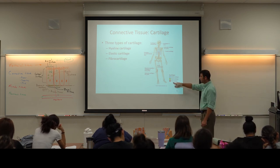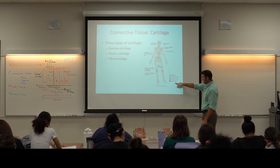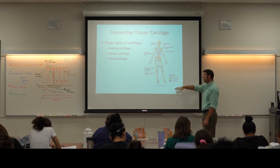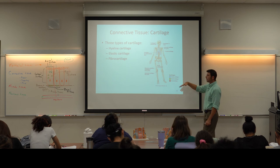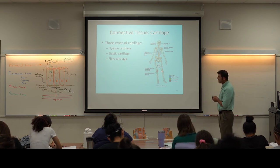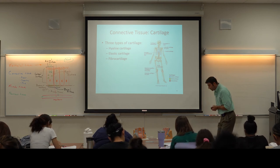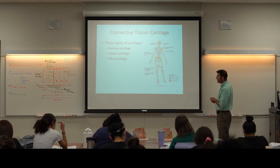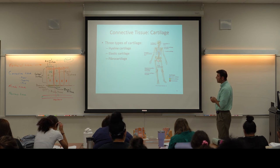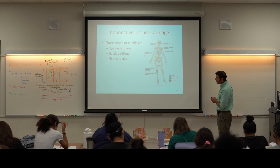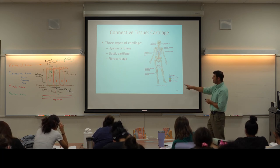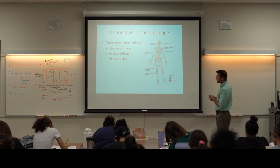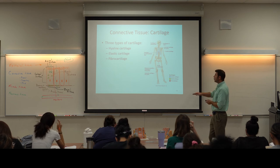The last type of cartilage is fibrocartilage — it is the strongest, but intermediate in how frequently we find it. Hyaline is most common, elastic is least common, and fibrocartilage is in between. We see it in places like the meniscus of the knees, which supports all body weight, and in the pubic symphysis where the two halves of the pelvic girdle are held together. The intervertebral discs between vertebrae are also made of fibrocartilage — again, supporting a lot of body weight.